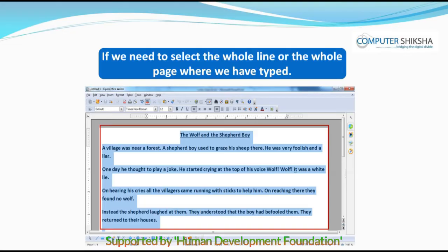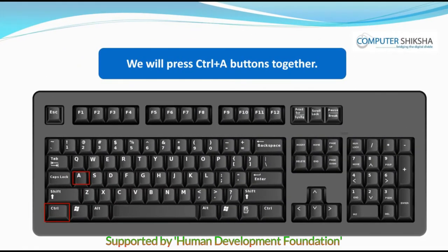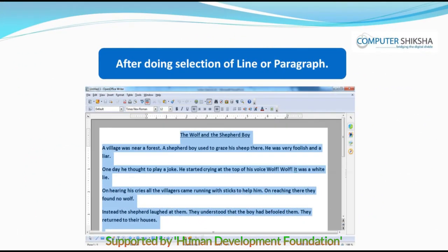If we need to select the whole line or page where we have typed, we will press CTRL plus A together. This will select the whole line or paragraph. When the line or paragraph gets selected, the text gets displayed in a blue color background, which indicates that a text has been selected.